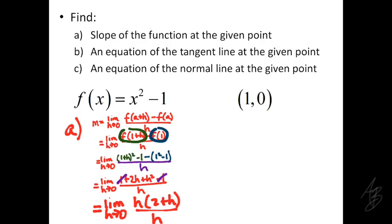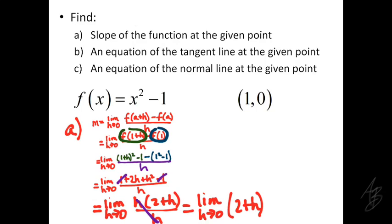Since we're taking the limit as h approaches 0, h is not going to equal 0 but is just close to 0, so we can cancel the h's. Dividing numerator and denominator by h leaves us with the limit as h approaches 0 of 2 plus h. This is a limit we can evaluate using direct substitution — putting 0 in for h, we just get 2. So the slope of the tangent line of this function when x equals 1 is 2.